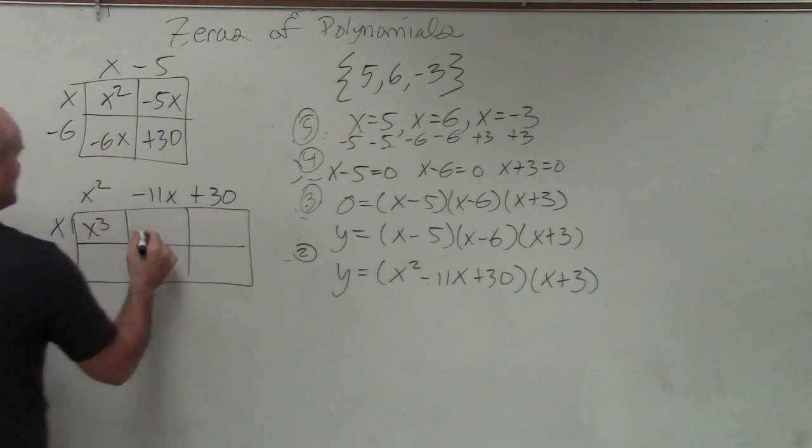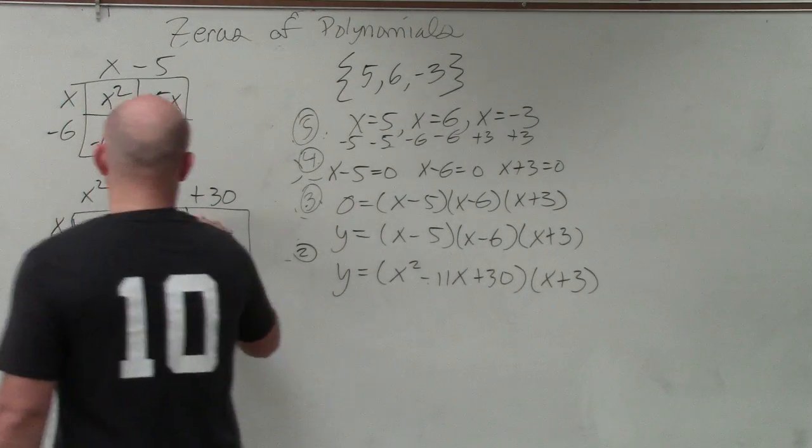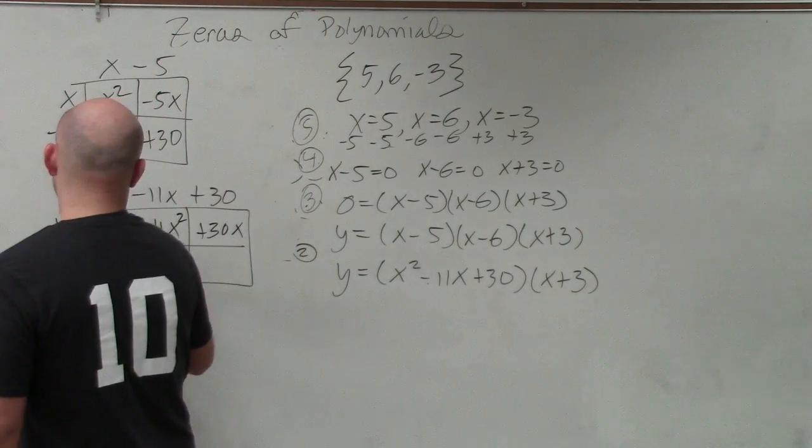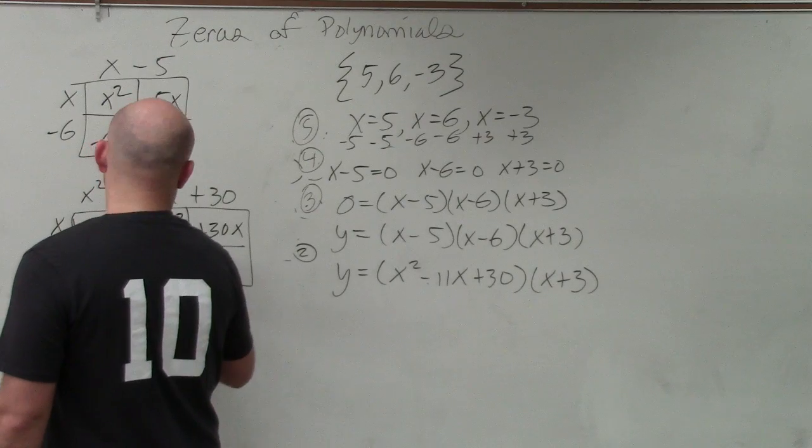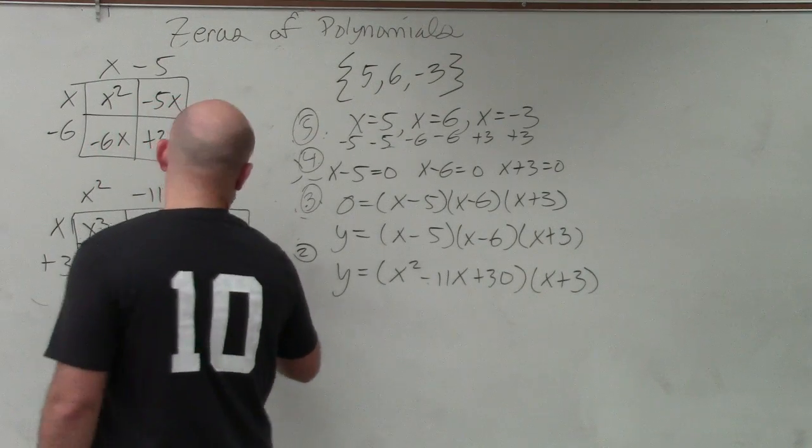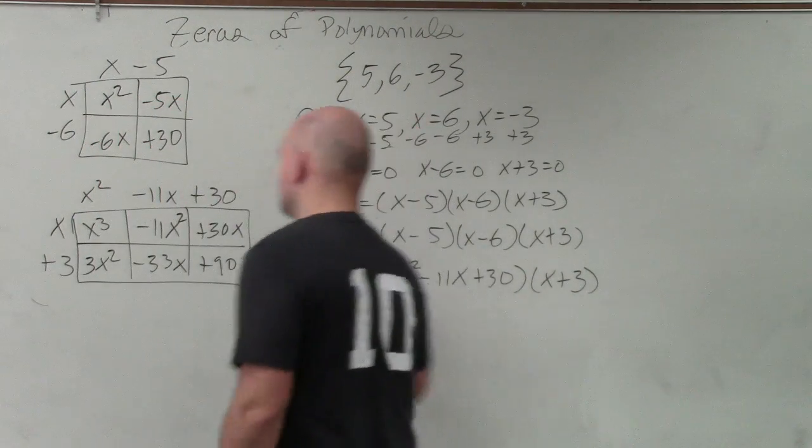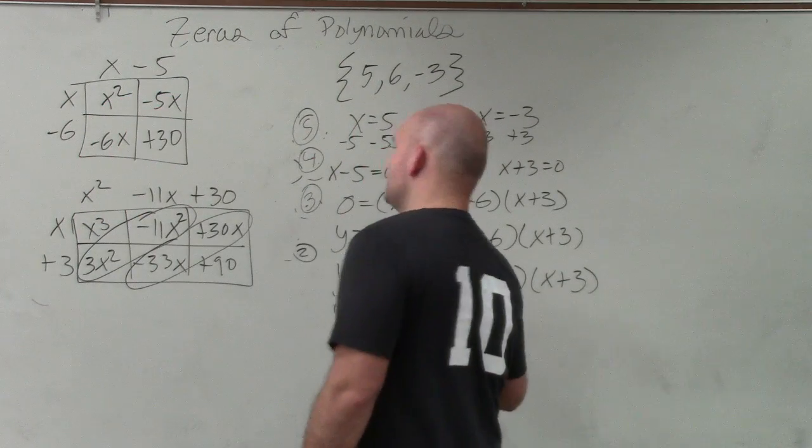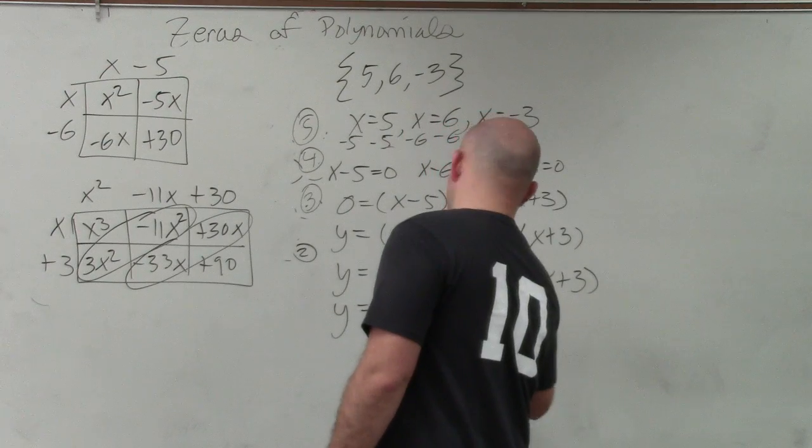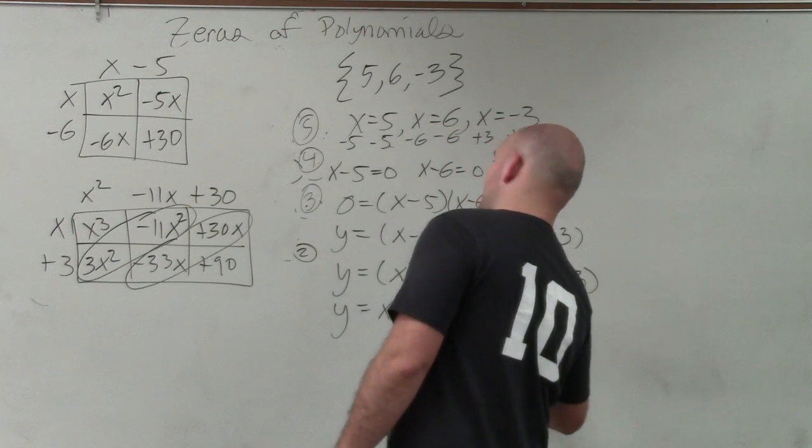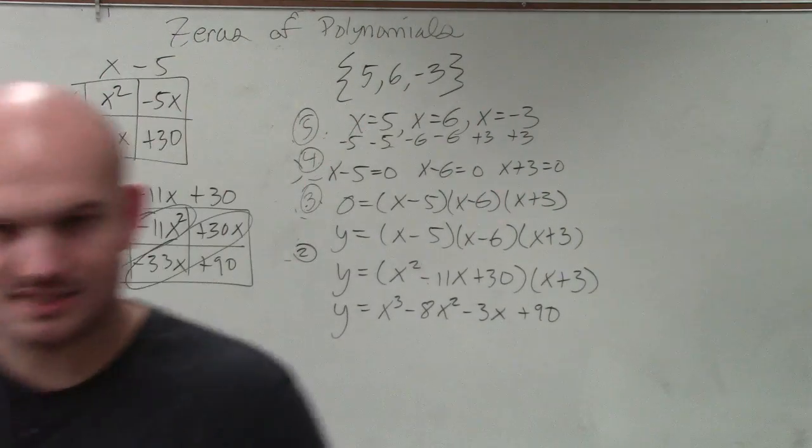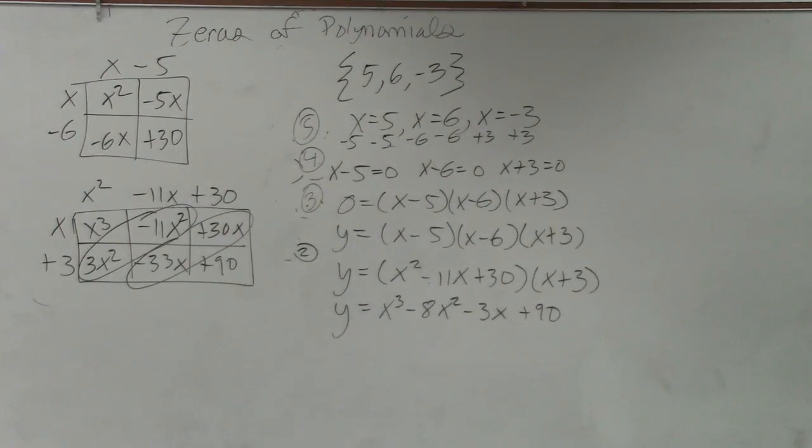So I get x cubed minus 11x squared plus 30x plus 3x squared minus 33x plus 90. So my final equation, those are like terms, those are like terms, is x cubed minus 8x squared minus 3x plus 90. Done, son. Make sure you guys write down your homework.